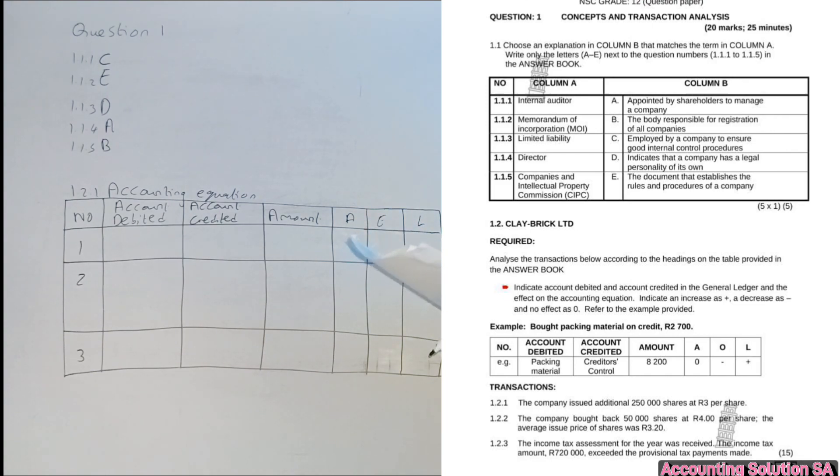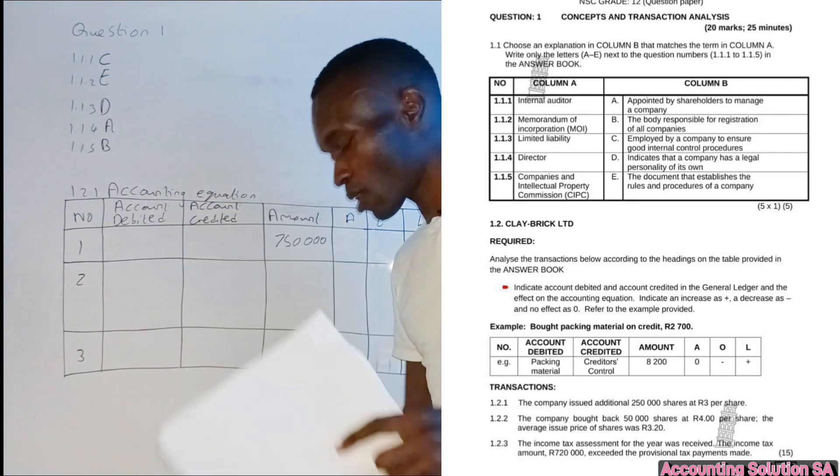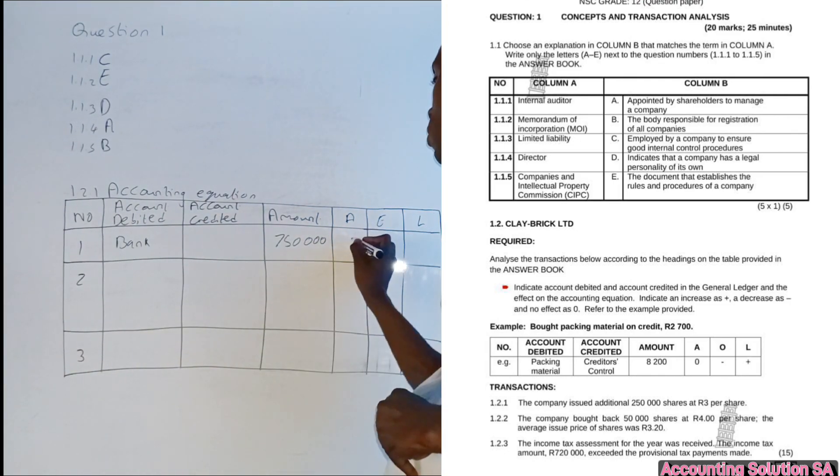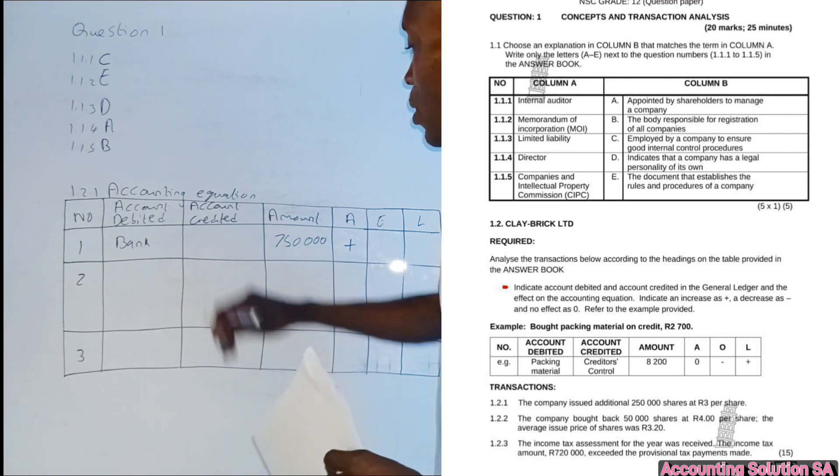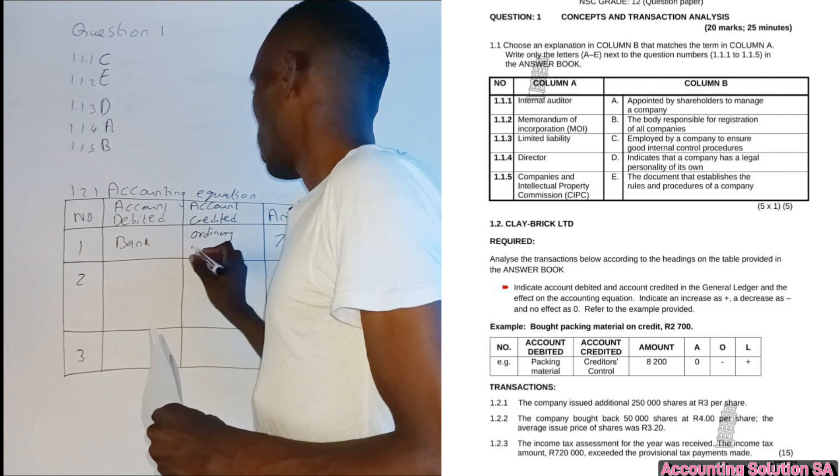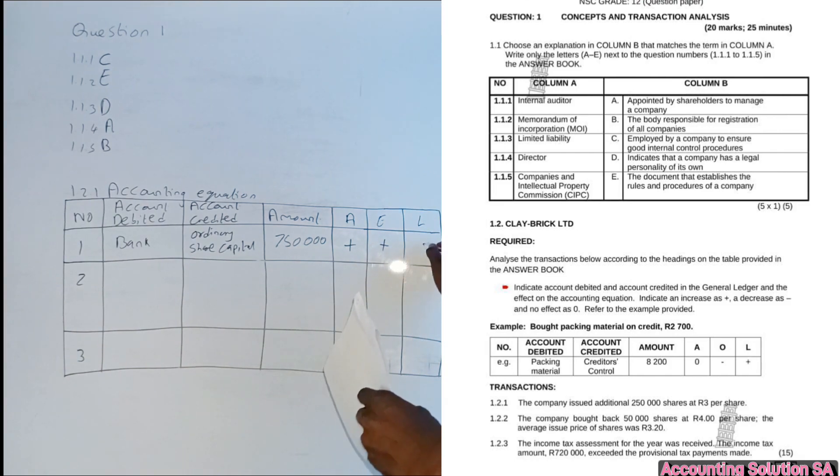1.2.1, the company issued additional 250 shares at R3 per share. Which means we have to multiply to get the amount. If you multiply, you're going to get R750. We issued shares. Obviously our bank is going to increase. Let's start from bank because we receive money from those who purchase the shares. Bank is going to be plus. Our bank has increased. What else is going to increase is ordinary share capital. Now we have more shareholders, which means our equity is going to increase. Ordinary share capital is a plus. This side is going to be unchanged.